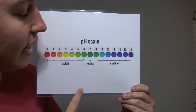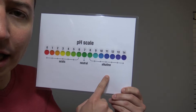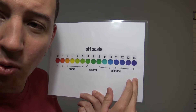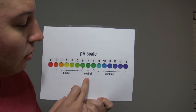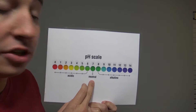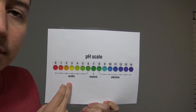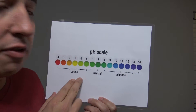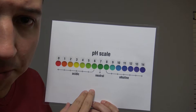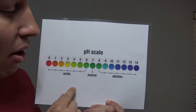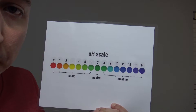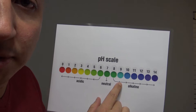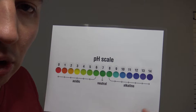This is the pH scale. It allows us to measure how acidic or alkaline a solution is. It is a numerical scale from zero all the way to 14. In the middle, we have distilled pure water with a pH of 7. Anything below 7 is acidic and anything above 7 is alkaline. The further you move away from 7, the stronger the solution becomes. Each number is 10 times more powerful than the preceding number. A pH of 8 is 10 times more alkaline than 7, and a pH of 9 is 100 times more alkaline than 7, and so on.